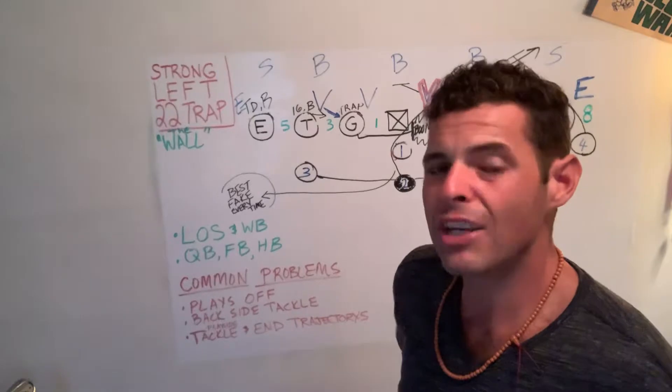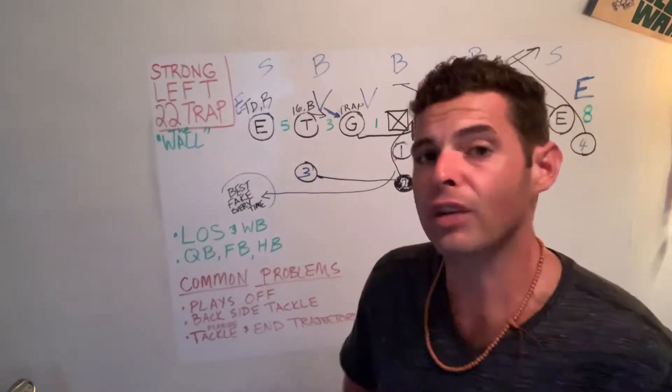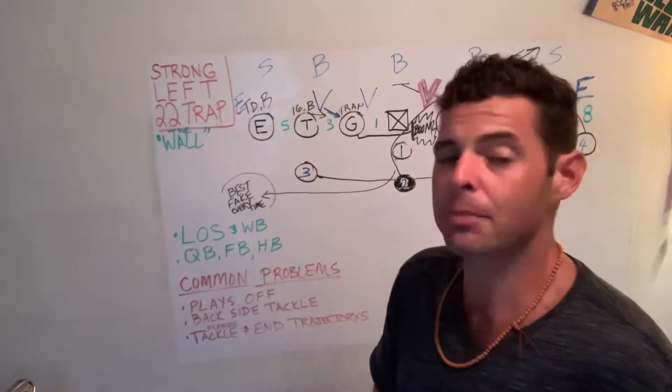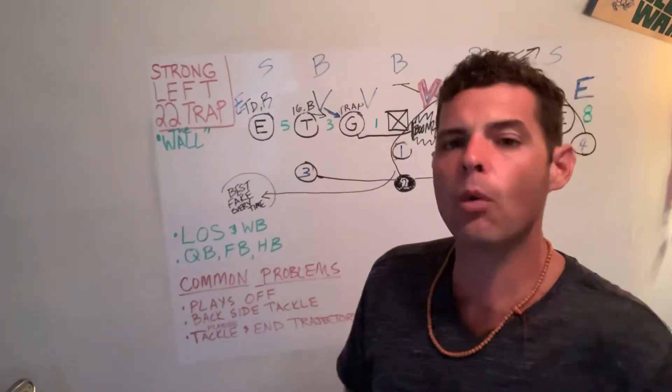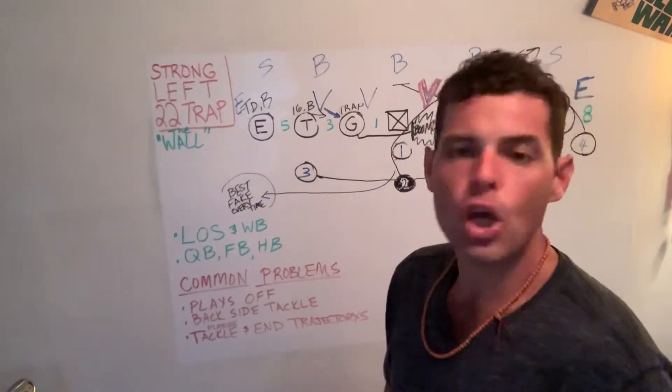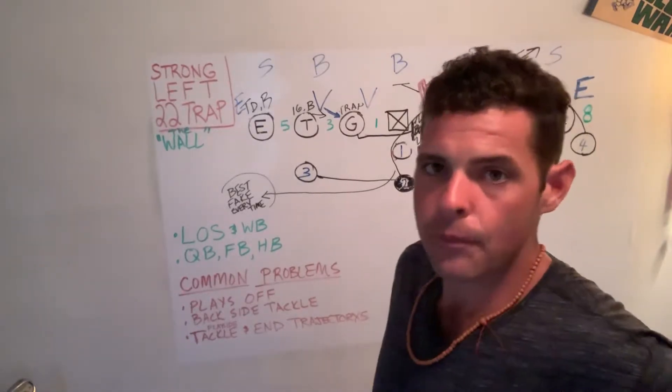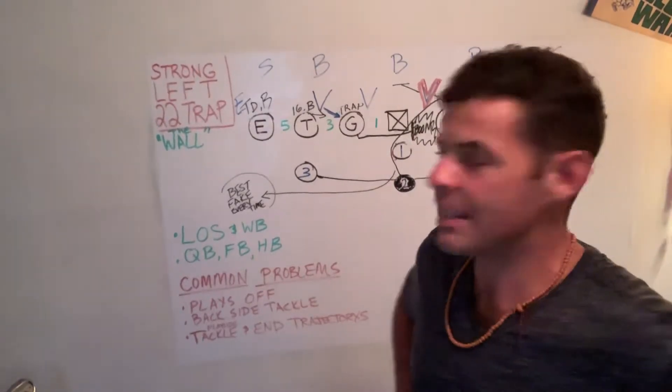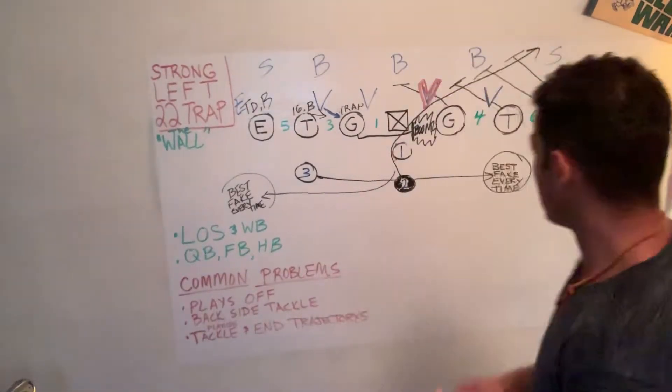identify the trap man. On one and two trap, it's the first man past the center. On three and four trap, it's the first man past the guard. Identify the trap man. Anyone beyond the trap man is a nobody. Got me? No one is assigned them. They're nobody. We're not blocking them.